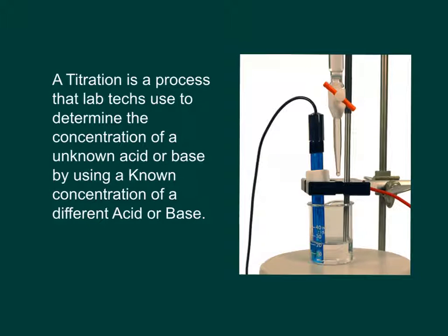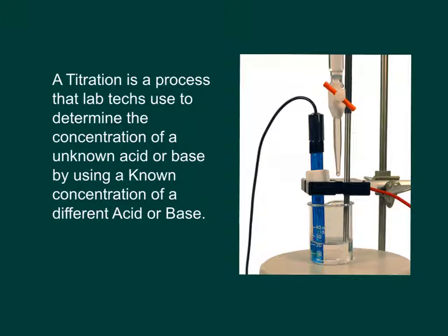When we do a titration, what we're doing is taking the concentration of a known substance and trying to determine what the concentration of the unknown substance is. When we reach what's known as the equivalence point, that means there is an equal amount of one to the other. Normally the first one you'll do is using an unknown acid with a known base. The base is usually something we call standardized - that means it has been tested to know exactly what its concentration is.